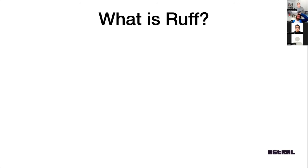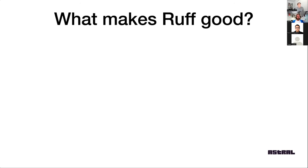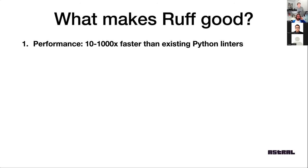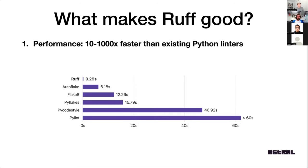My first slide was about what Ruff is, but the more interesting question is: what makes Ruff good? The kind of headline feature is that Ruff is just really fast compared to a lot of other existing tools. We have this benchmark in our readme. This is Ruff running compared to a bunch of other tools with its default configuration, no caching — and Ruff is comparatively very fast.